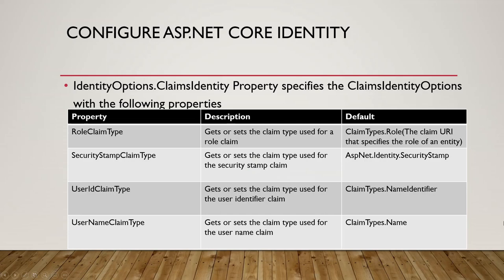IdentityOptions.ClaimsIdentity specifies the ClaimsIdentityOptions with the following properties in a table showing the property name, description, and default value. RoleClaimType gets or sets the claim type used for a role claim — default is ClaimTypes.Role, the claim URI that specifies the role of an entity. SecurityStampClaimType gets or sets the claim type used for the security stamp claim — default is AspNet.Identity.SecurityStamp. Similarly you have UserIdClaimType and UserNameClaimType.